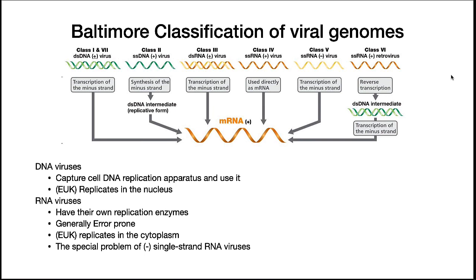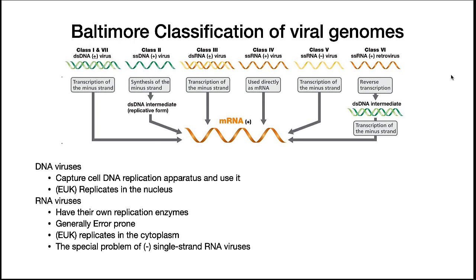Viruses are classified by how they make messenger RNA, a system first proposed by David Baltimore. In this scheme, strands are plus and minus. The plus strand is the coding strand that encodes directions for making the proteins of the virus, and the negative strand is the template strand, which is copied to make the plus strand. Class 1 viruses are double-stranded DNA and use the normal transcription and replication machinery of the host. Class 2 viruses have a single positive DNA strand — they synthesize a complementary strand to become double-stranded DNA and then make messenger RNA as class 1 does.